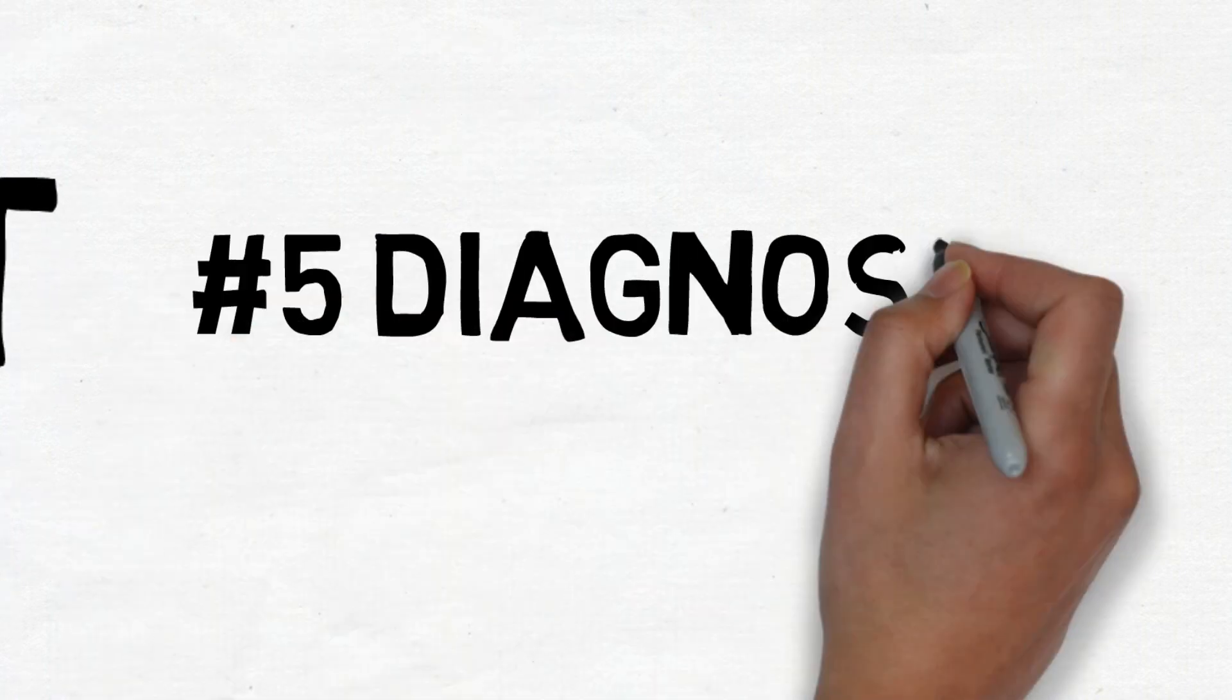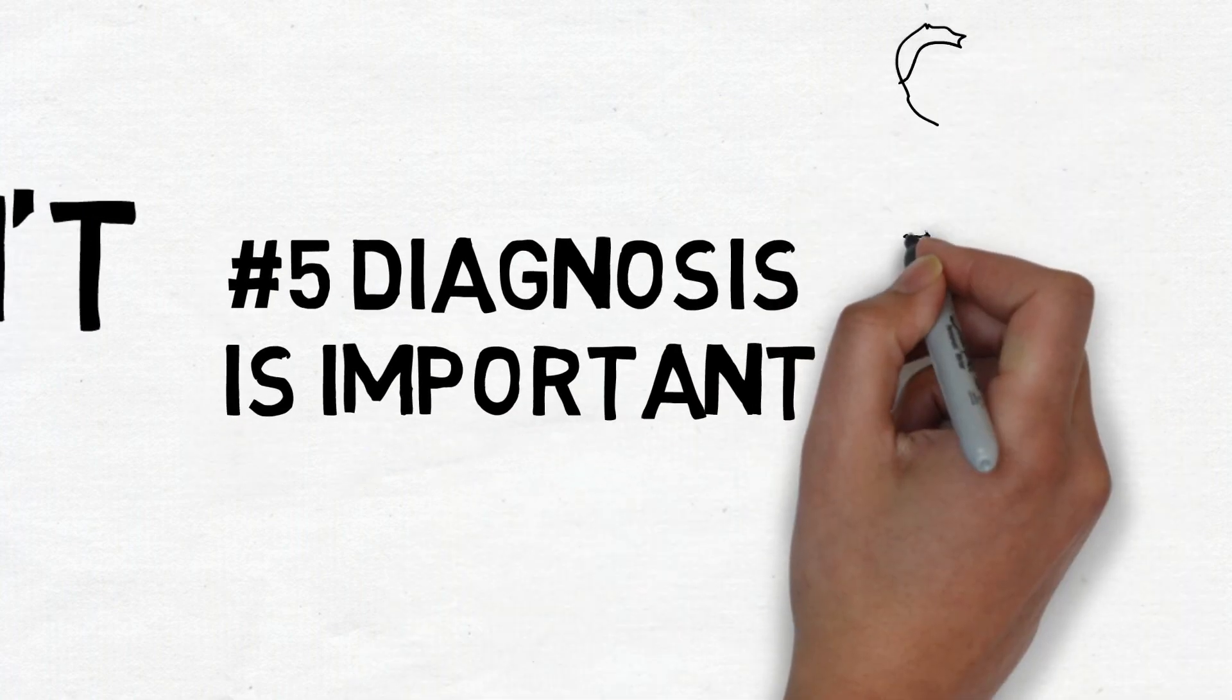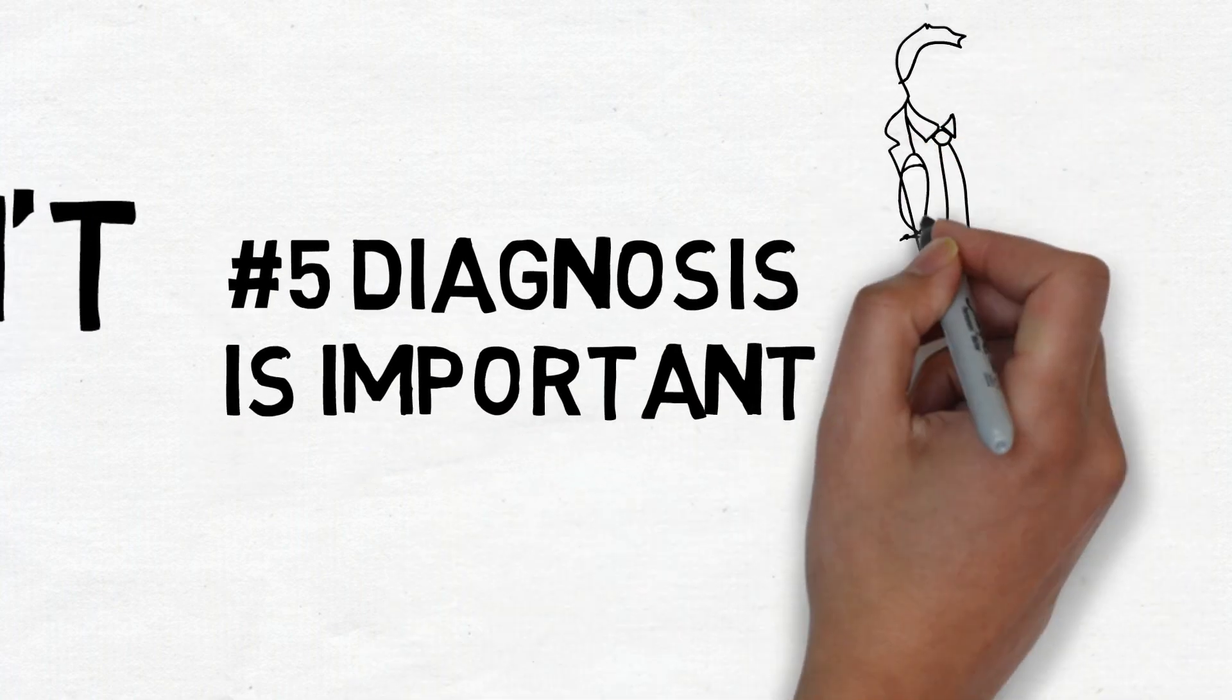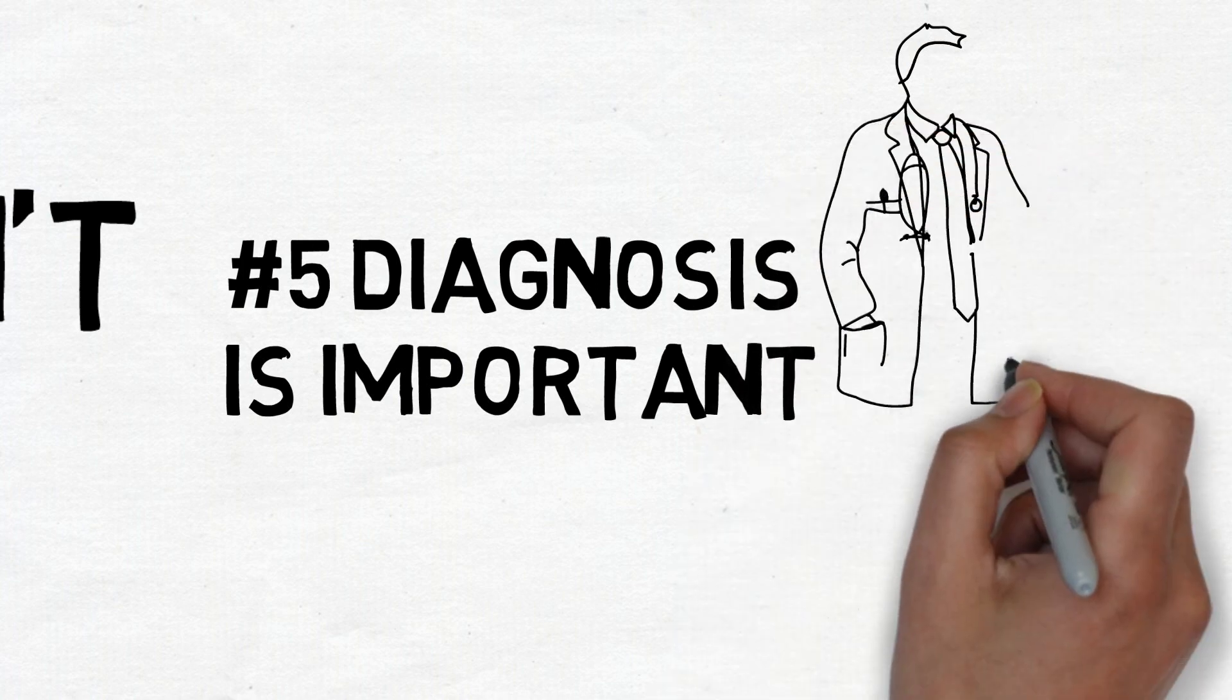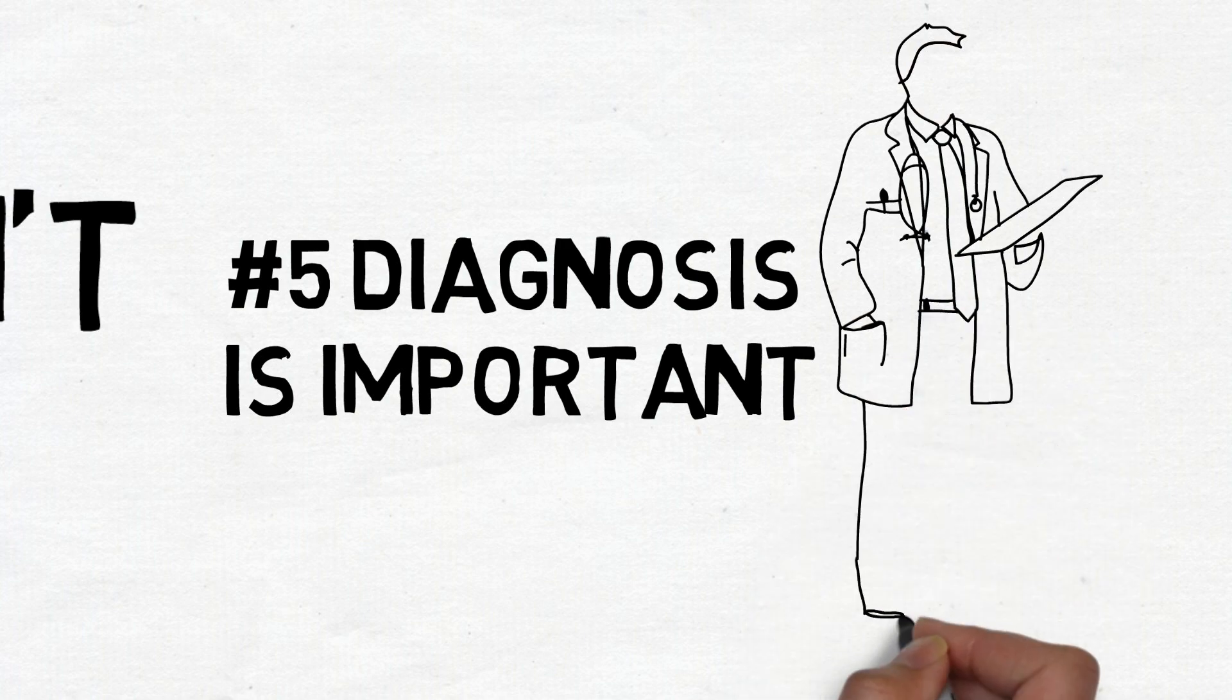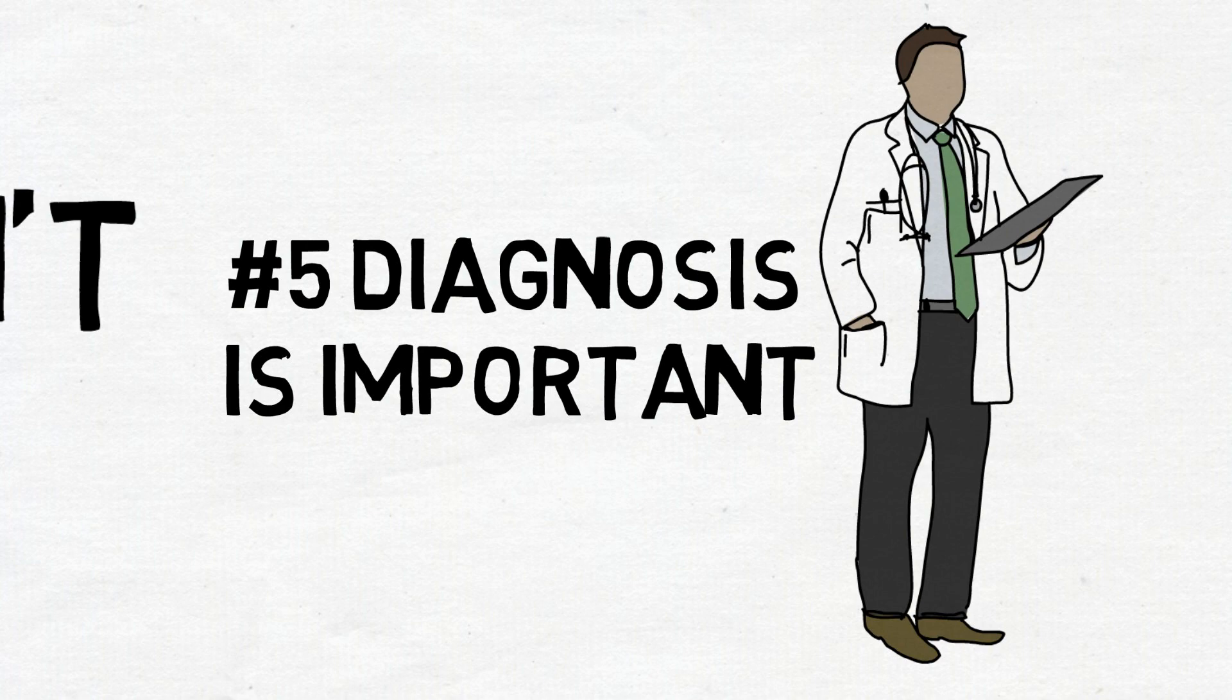Number 5. Getting a diagnosis is important. With Bell's Palsy, a diagnosis is focused on making sure you aren't suffering from a more serious condition like Lyme disease or a brain tumor. Because there's no specific test for Bell's Palsy, the diagnosis generally includes blood tests, x-rays, or scans of your brain that can rule out other conditions.